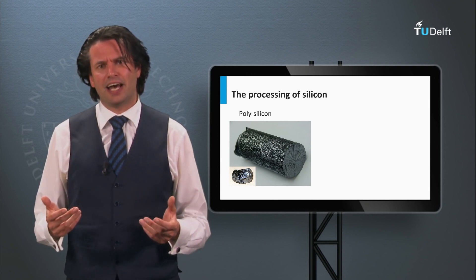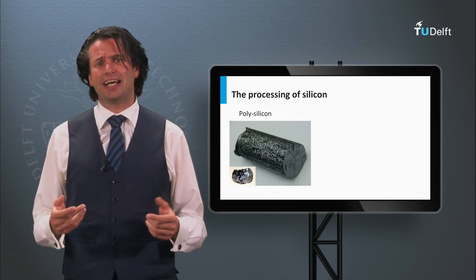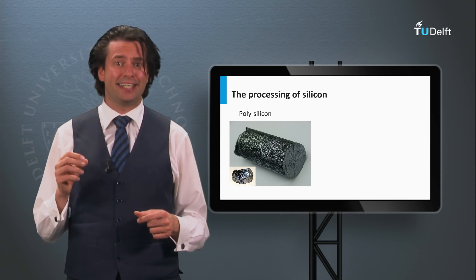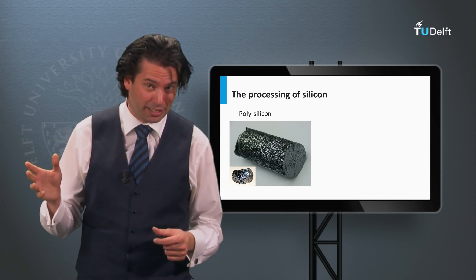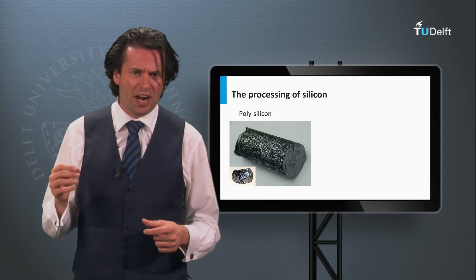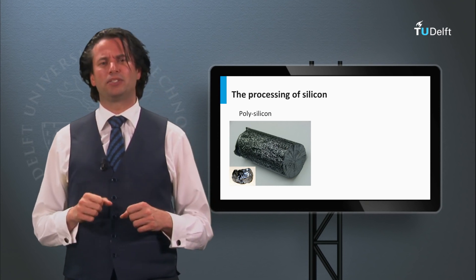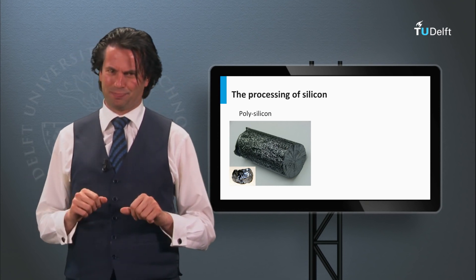Polycrystalline silicon can have a purity as high as 99.9999%, meaning that only 1 out of every 1 million atoms is not a silicon atom.